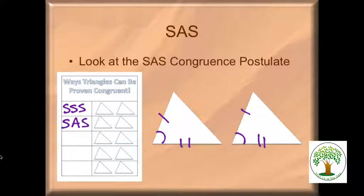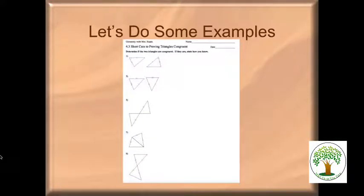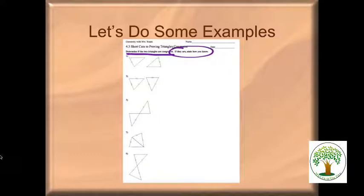These are the only two shortcuts we're doing today. Let's work through the practice problems together. The instructions say: determine if the triangles are congruent, and if they are, state how — SSS or SAS — but they might not be congruent. Number one: are they congruent? Side, angle, side. Number three: side, side, side. Number five: be very careful.